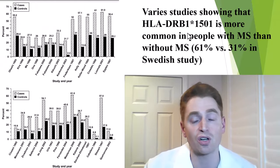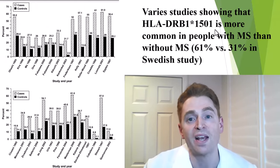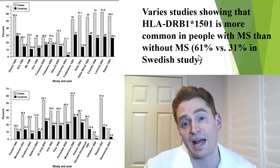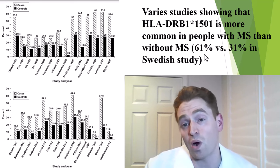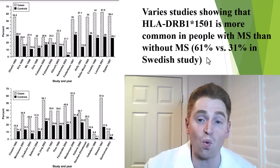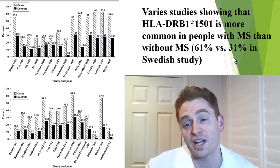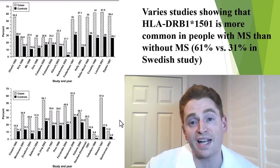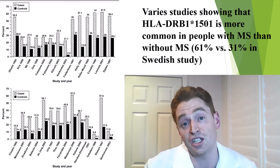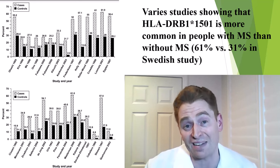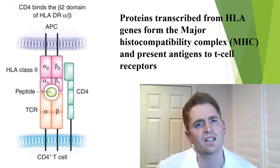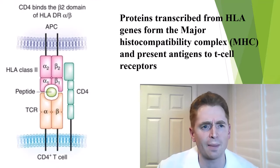They looked at a lot of different genes associated with MS, but the gene most strongly linked to MS is HLA-DRB1*1501. In various studies, it's more common in people with MS than without MS. For instance, 61% of people with MS in Sweden have at least one copy of the allele versus only 31% of people without MS. But the prevalence of the gene varies considerably in different regions — for example, Ashkenazi Jews compared to Europeans have around half the risk of having this allele, around 16%.